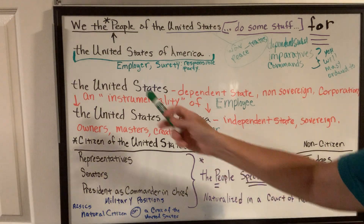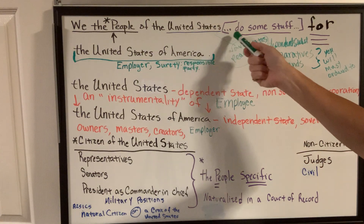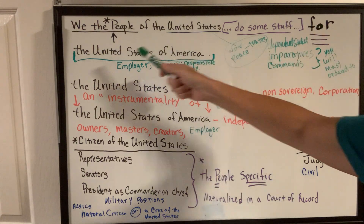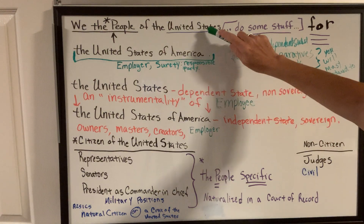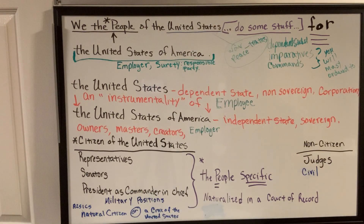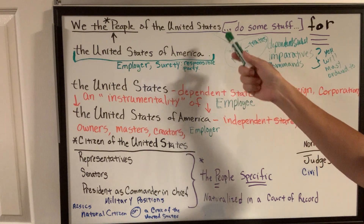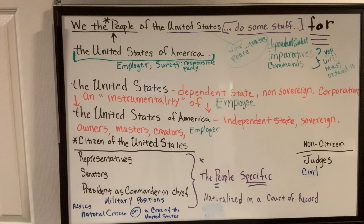So let's go over the preamble again. We, the employees of the federal government created by the states, do some stuff for the states collectively. This is between the state legislators, between each other, to create the United States. It has nothing to do with independent people inside the states. The independent people inside the states aren't responsible for the United States or what it does. We're not responsible for its debt, its payments, any of that. We're not supposed to register our properties with them.